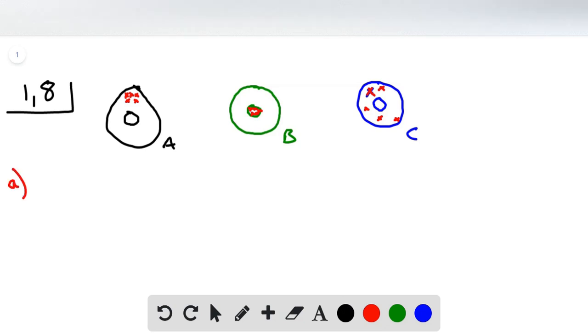So for A, target A is precise because all the shots are grouped very closely together. But it's not in the center, so we can't say that it's accurate.